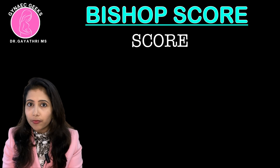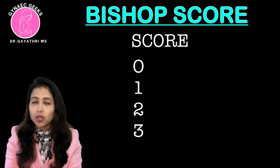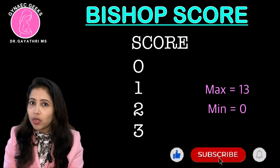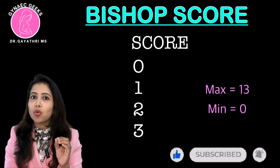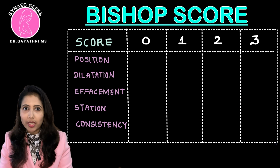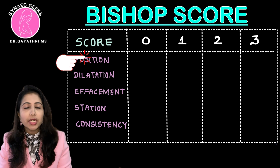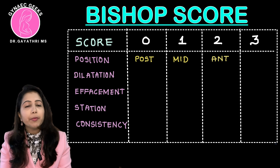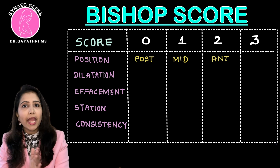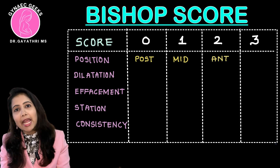Each of these components is given a score of 0 to 3, with a maximum score of 13 and a minimum score of 0. The first component is position. The position can be posterior, mid-position, or anterior, scored as 0, 1, and 2 respectively.